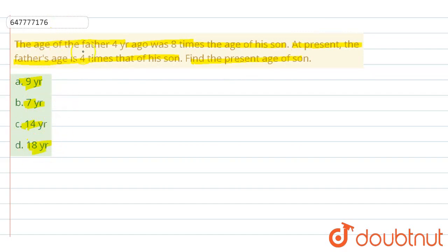Now we will see here, the age of father 4 years ago was 8 times the age of his son. If I talk about the son, if I talk about the age of son, then father's age is 8 times, 8x.